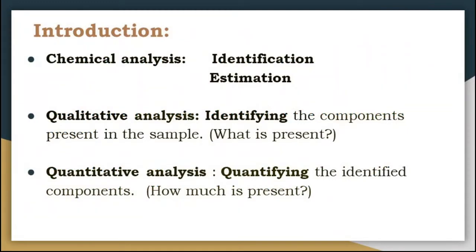We know that chemical analysis involves various chemical processes and operations which are carried out to identify a substance or to determine its composition. So, identification and estimation of substances are the two main aspects of chemical analysis. Identification and finding out the constituents of a substance is nothing but qualitative analysis. Estimation of the exact amount of a constituent of a substance is nothing but quantitative analysis. In other words, qualitative analysis finds out what is present and quantitative analysis finds out how much is present.